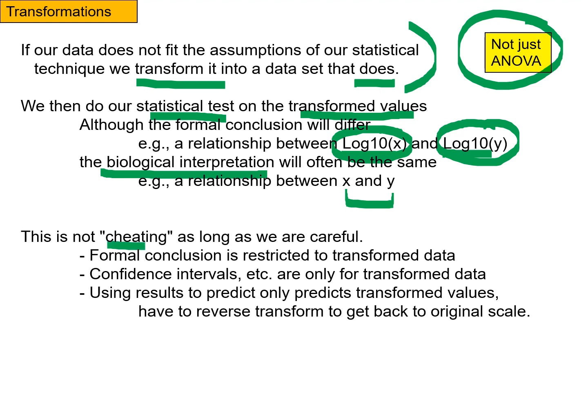So this is not cheating as long as we're careful. First of all, we have to remember the formal conclusion is restricted to the transformed data. Any confidence intervals or whatever that we calculate, that's only for the transformed data.